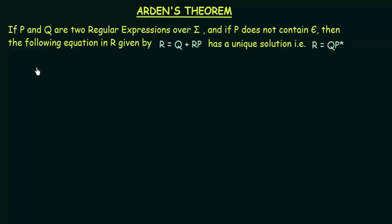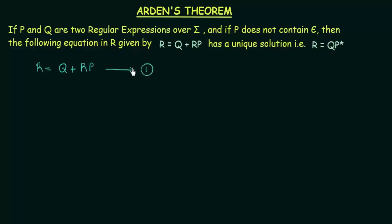First we will take this equation: r = q + rp. This is the first equation that we have, so let me call it equation number 1.